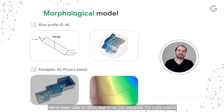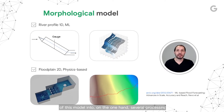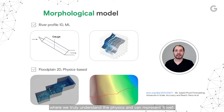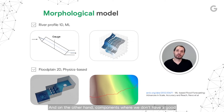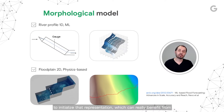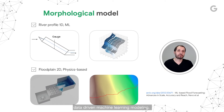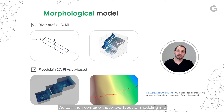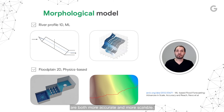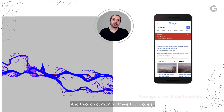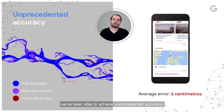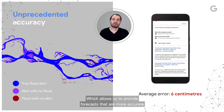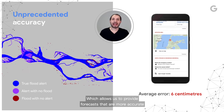We've been able to show that if we can separate the components of this model into, on the one hand, several processes where we truly understand the physics and can represent it well, and on the other hand, components where we don't have a good representation of the physics or we don't have enough information to initialize that representation — which can really benefit from data-driven machine learning modeling — we can then combine these two types of modeling in a single model, and produce results that are both more accurate and more scalable. Through combining these two models, we've been able to achieve unprecedented accuracy, which allows us to provide forecasts that are more accurate and more actionable.